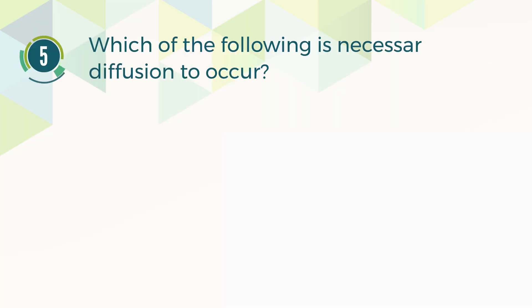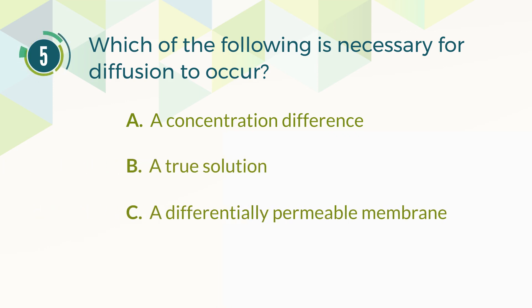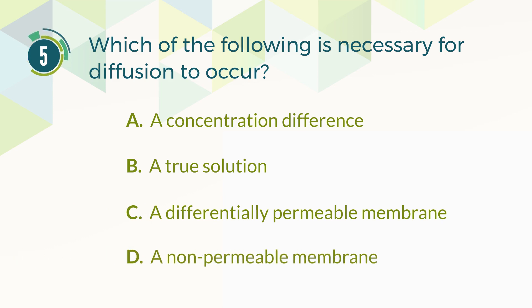Number 5. Which of the following is necessary for diffusion to occur? A. A concentration difference. B. A true solution. C. A differentially permeable membrane. D. A non-permeable membrane.